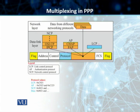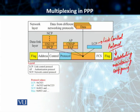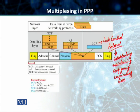The first one, as you can see, is your LCP — the Link Control Protocol. This is responsible for establishing, maintaining, configuring, and finally terminating our PPP links. It also provides the negotiation mechanisms to set the options between the two endpoints, and we'll talk about what those options are.